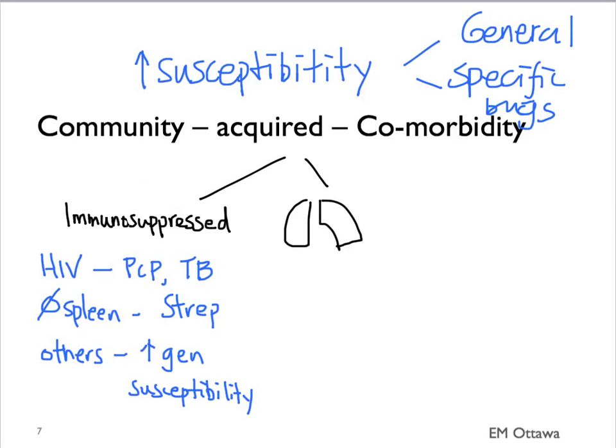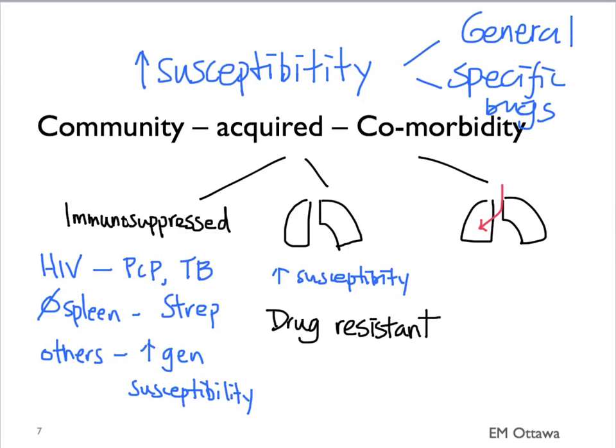In patients with underlying lung diseases, they are more likely to get infection generally. They are also more likely to undergo multiple courses of antibiotics frequently. Therefore, we are much more worried about drug-resistant organisms in them. Lastly, for patients who have increased aspiration risks, since the aspirate is from the GI tract, we are worried about anaerobes such as Fusobacterium and Klebsiella.